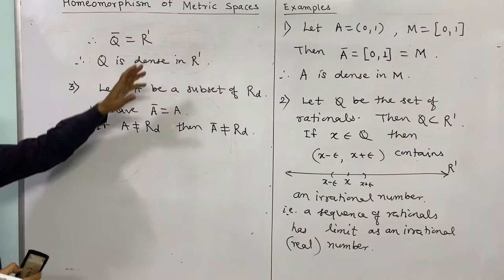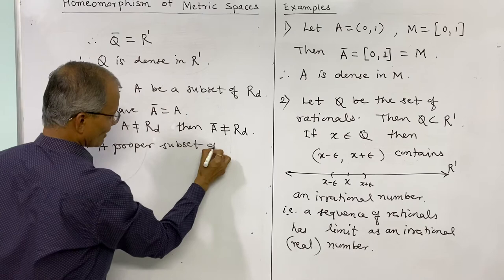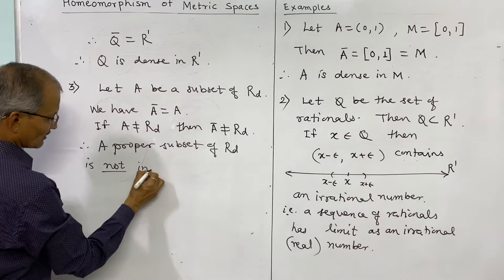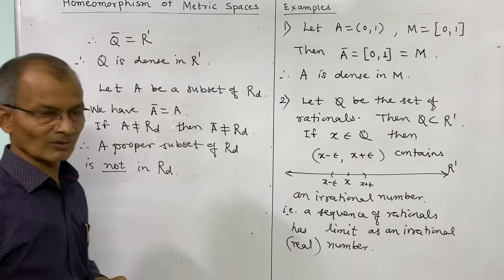Therefore, a proper subset A of the discrete metric space RD is not dense in RD. This is an example of a set which is not dense. Since every singleton set in RD is closed, the closure of A equals A — and if A is a proper subset, its closure cannot equal the whole space.